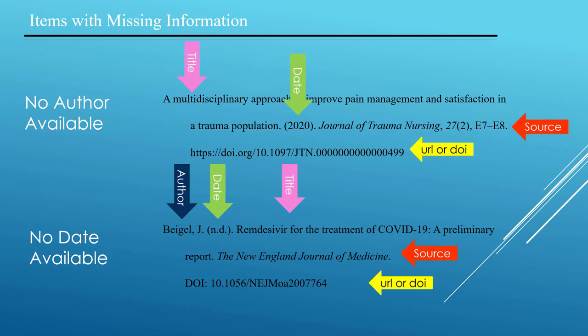Sometimes you'll have a source for which all of the information is not available. Sometimes we find really good database articles with no author attributed or no date available, or a really old book with no publication date. Here's how you do that in APA 7 style: if there's no author available, you move the title up into the author's place, so the building blocks in that citation would be in the order of title, date, source. In the case of no date being available, you use the abbreviation N.D. to stand for no date, in parentheses where the date would normally go.